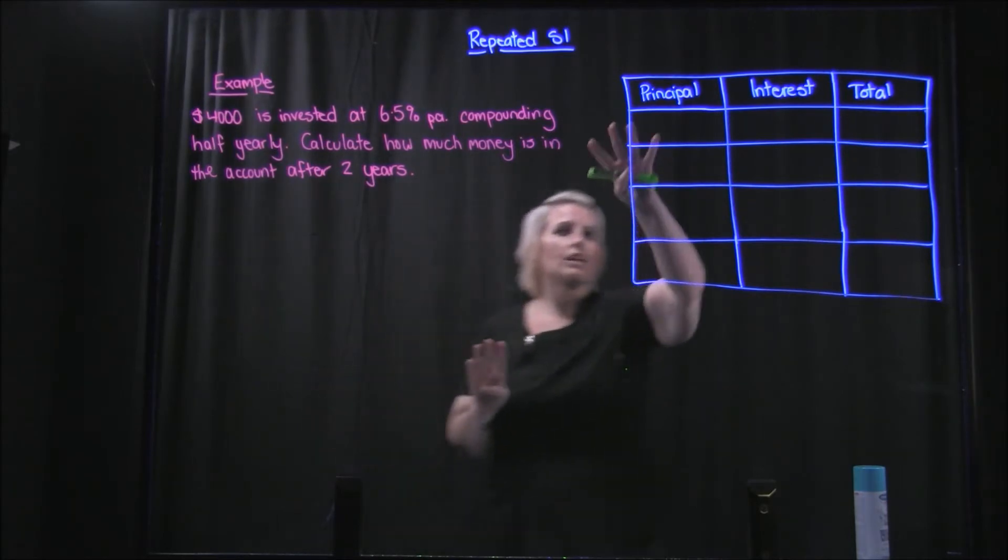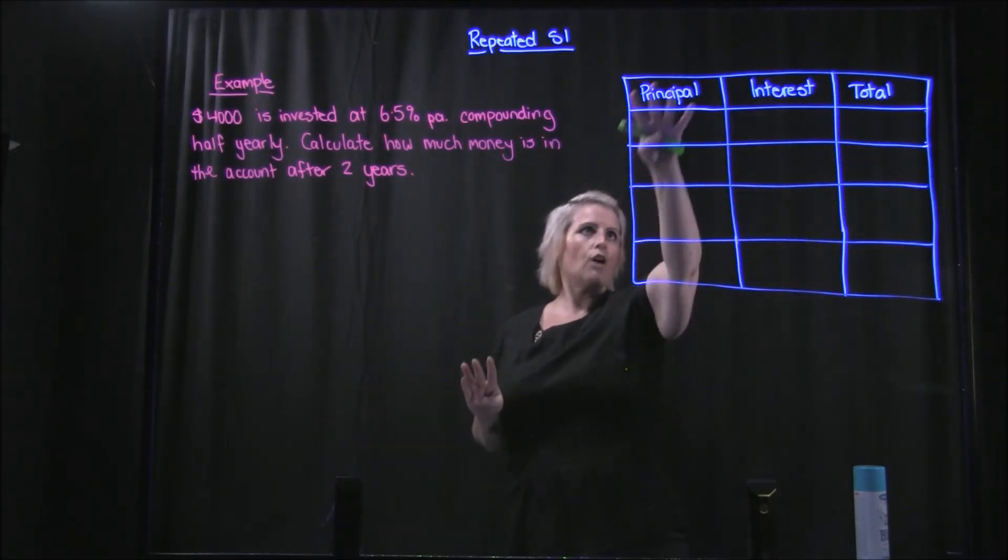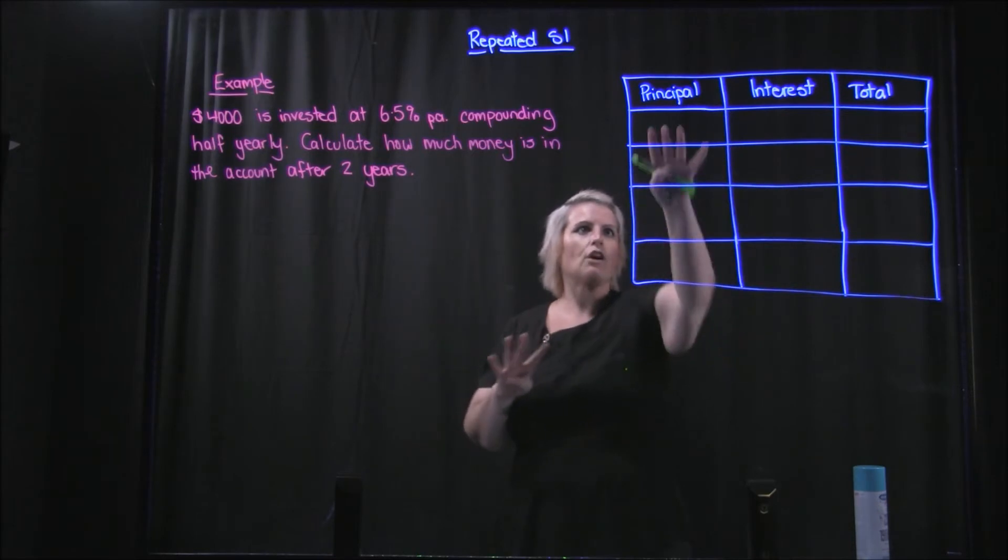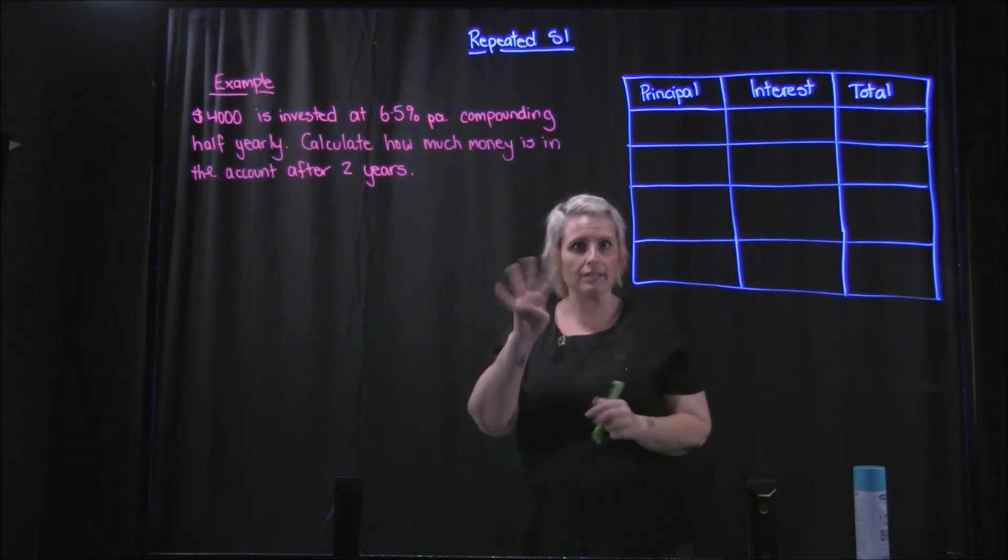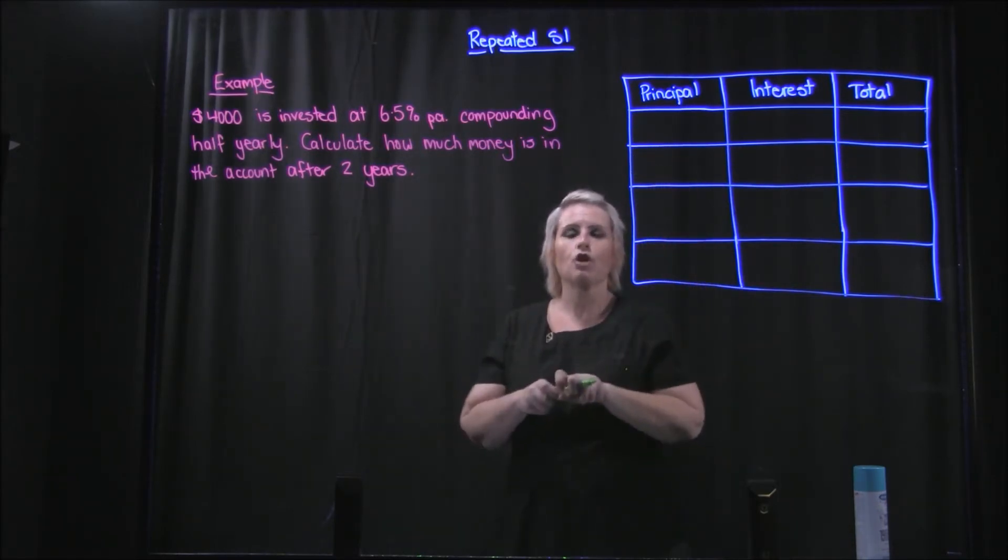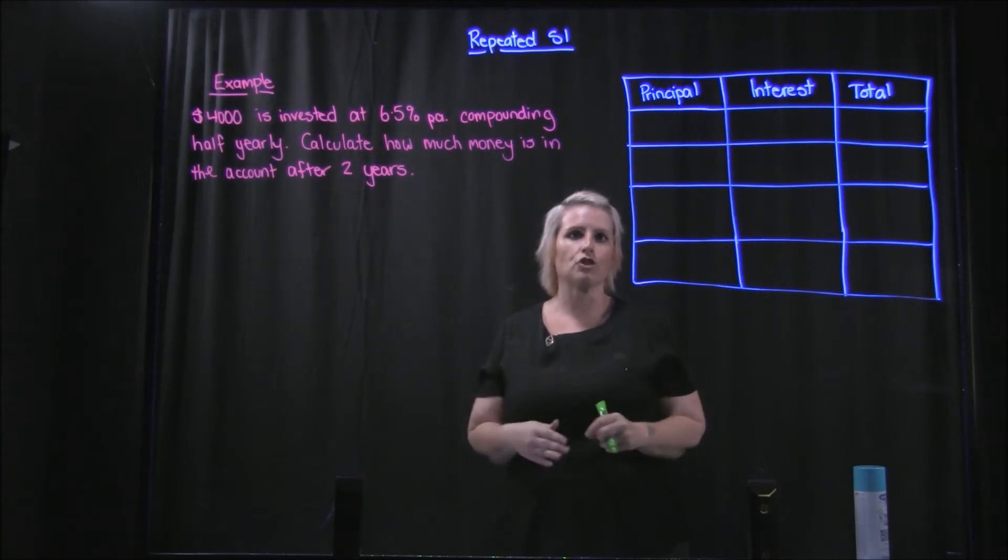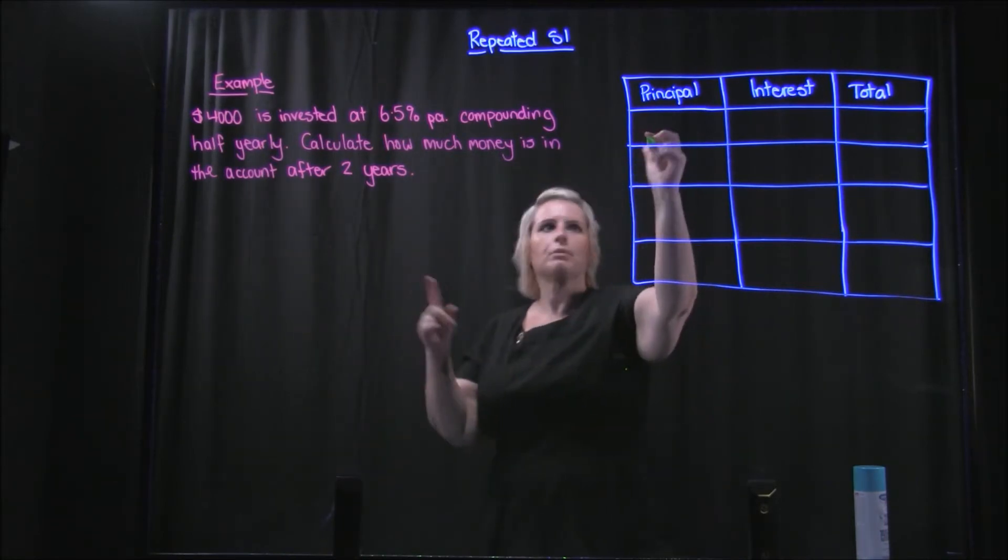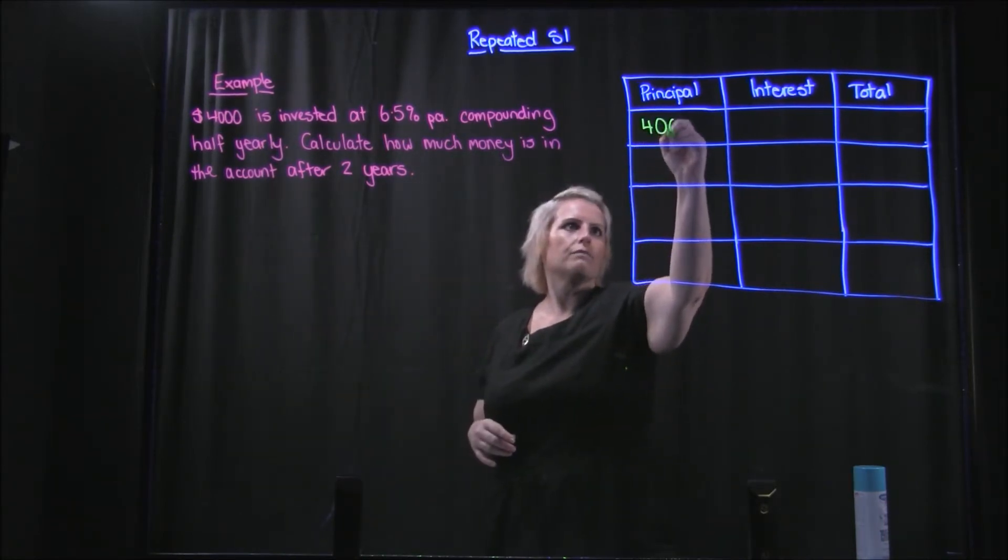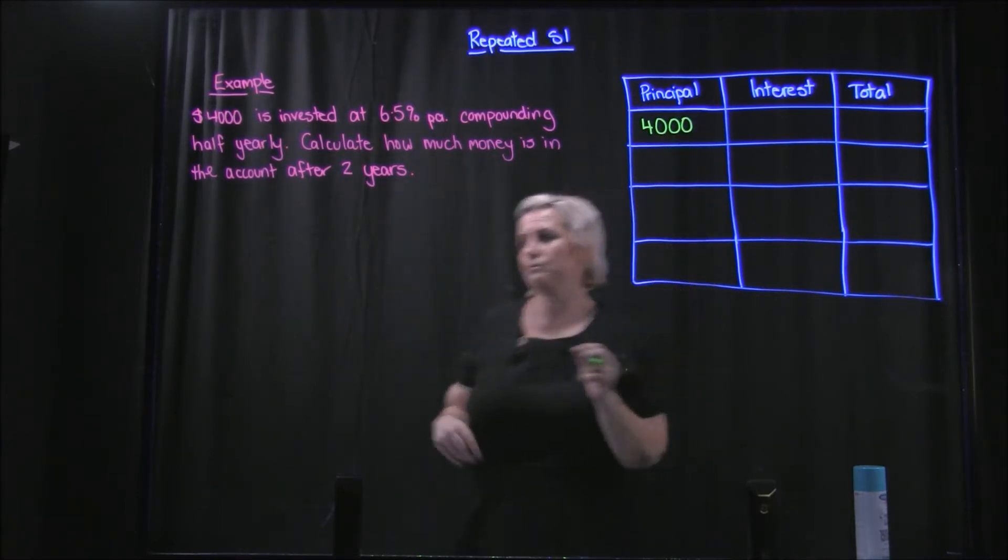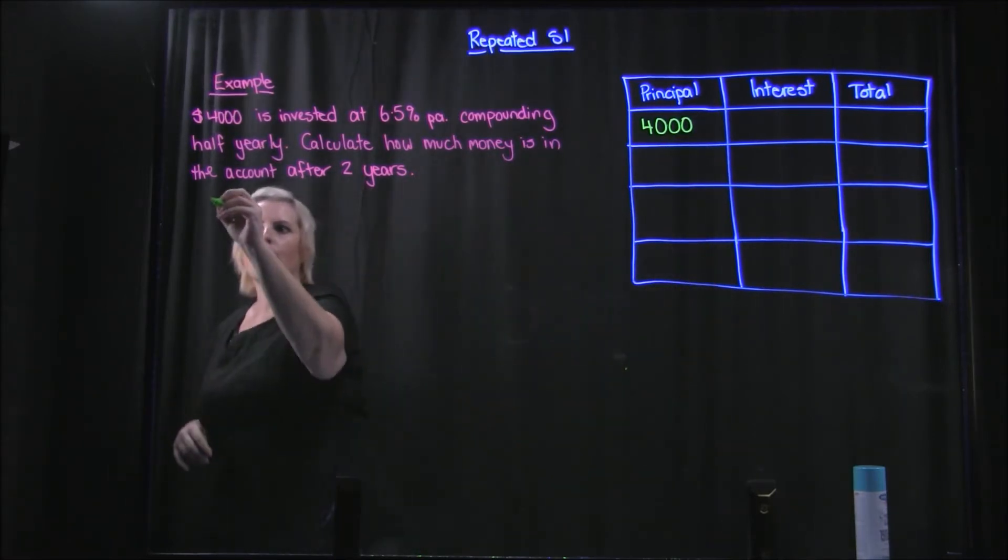So I've done up a table over here with the principal, interest, and total, and I've got four spots because it's going to take me four goes so that I can work out each lot of interest every time it compounds.